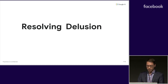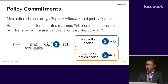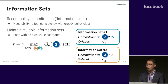So how do we prevent this from happening? Whenever we make a max action choice to generate a Q label, we're implicitly making a policy commitment which justifies that Q label. Whenever we make a max action choice at one state, it may conflict with another max action choice at another state — like in our example, we cannot do A and B in states one and two. So in some cases we may need to select action choices to generate Q labels which are non-maximal. To do this, we need two things. First, for each Q value estimate, we need to record the set of policy commitments which justify that Q value. We organize this into what we call information sets. Critically, we need the ability to test whether the policy commitments within an information set are consistent with respect to the greedy policy class.